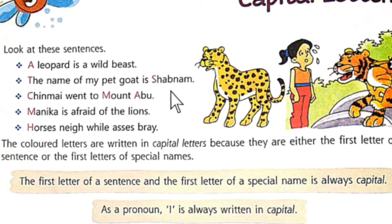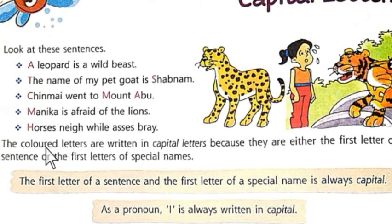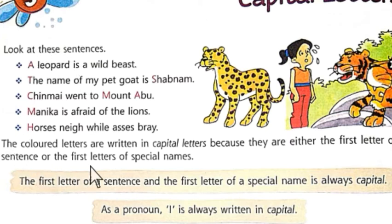Letters are written in capital letters because they are either the first letter of a sentence, or the first letters of special names. This means letters are written in capital letters because either the first letter of a sentence or the first letter of a special name requires capitalization.